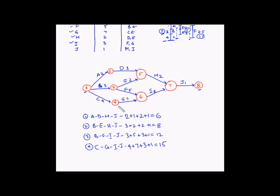We have now determined all possible paths from node 1 to node 8. Comparing total durations: 6, 8, 12, and 15 days. Since 15 is the longest, path C-G-I-J is the critical path. We denote this path with double arrows, and this is the path the project manager should keep a close eye on to ensure the project doesn't get delayed.